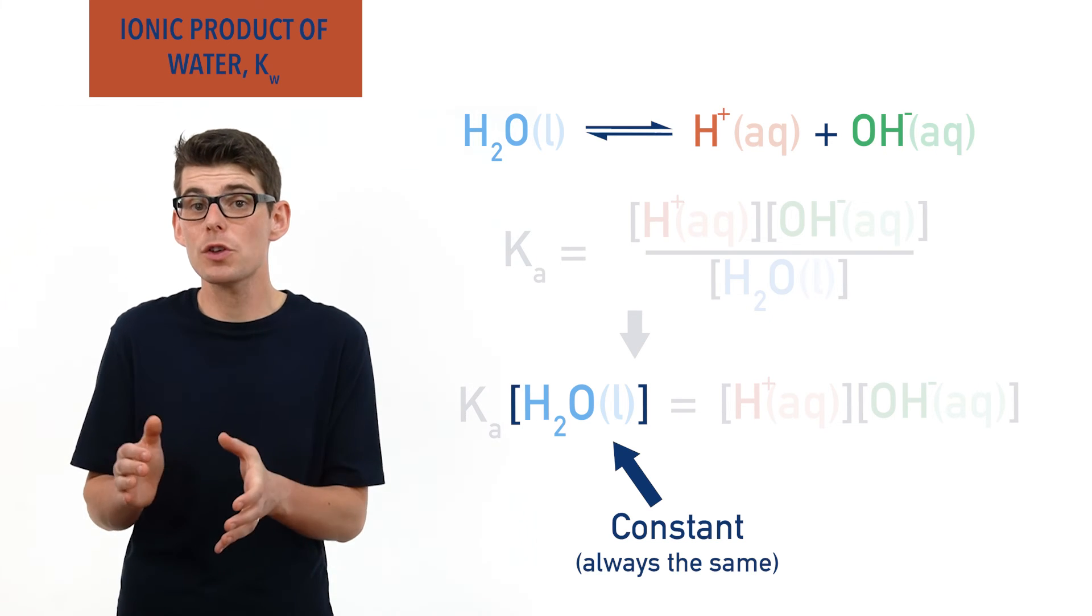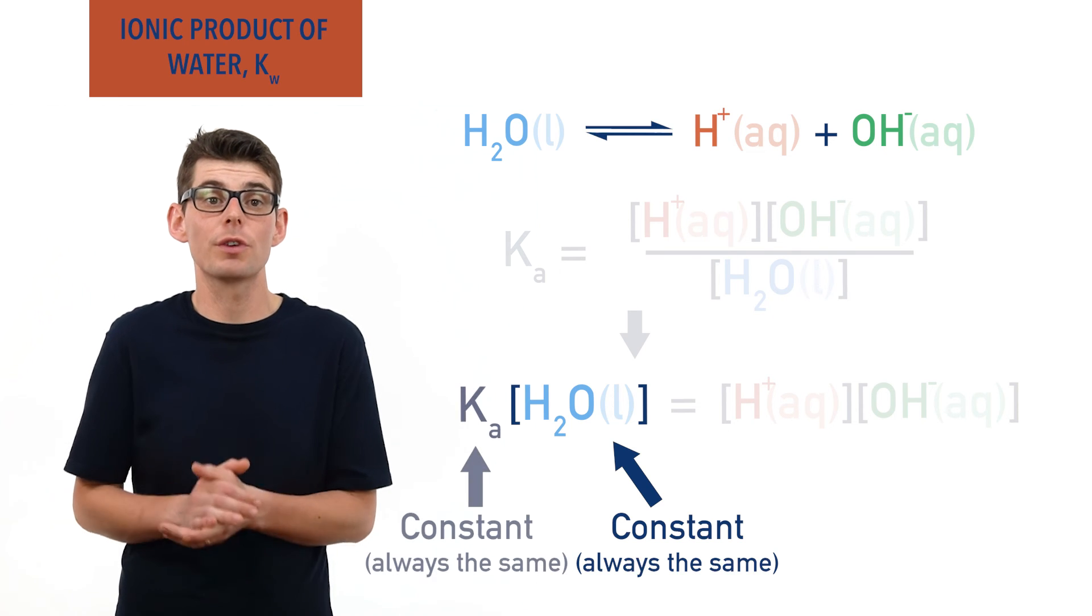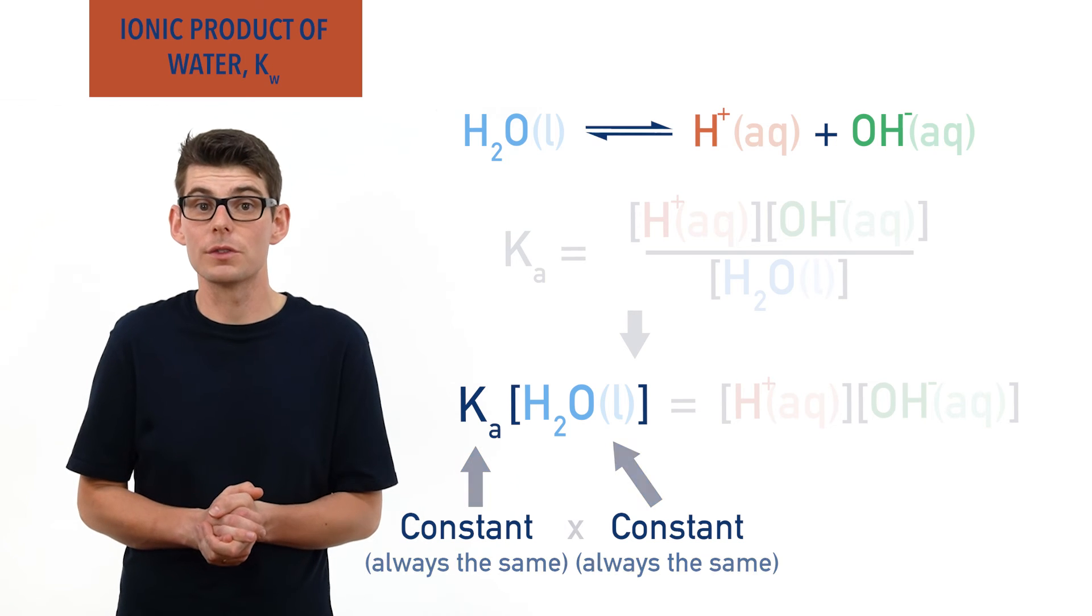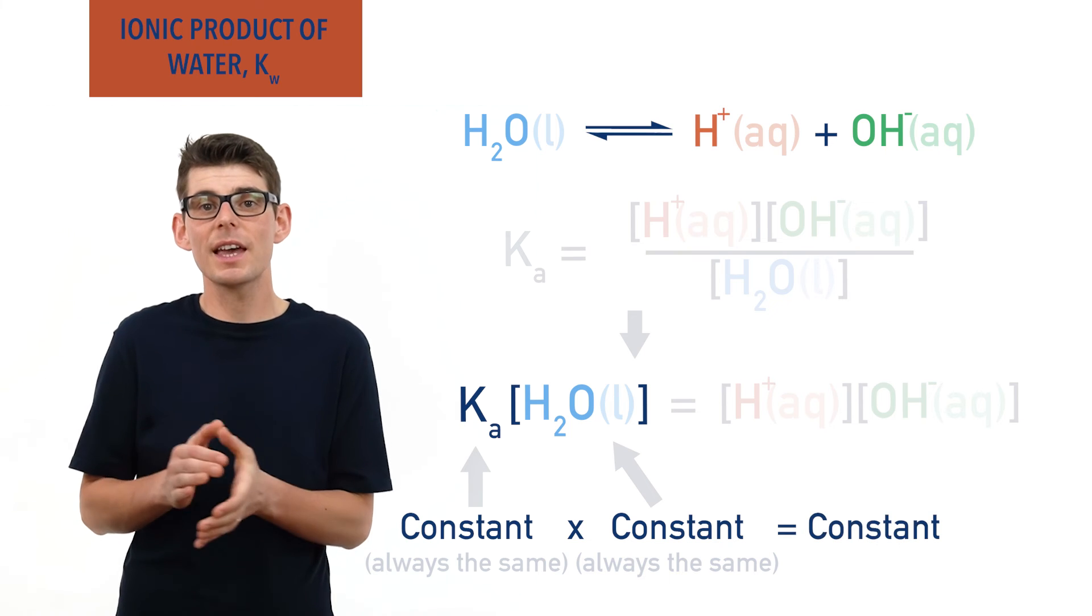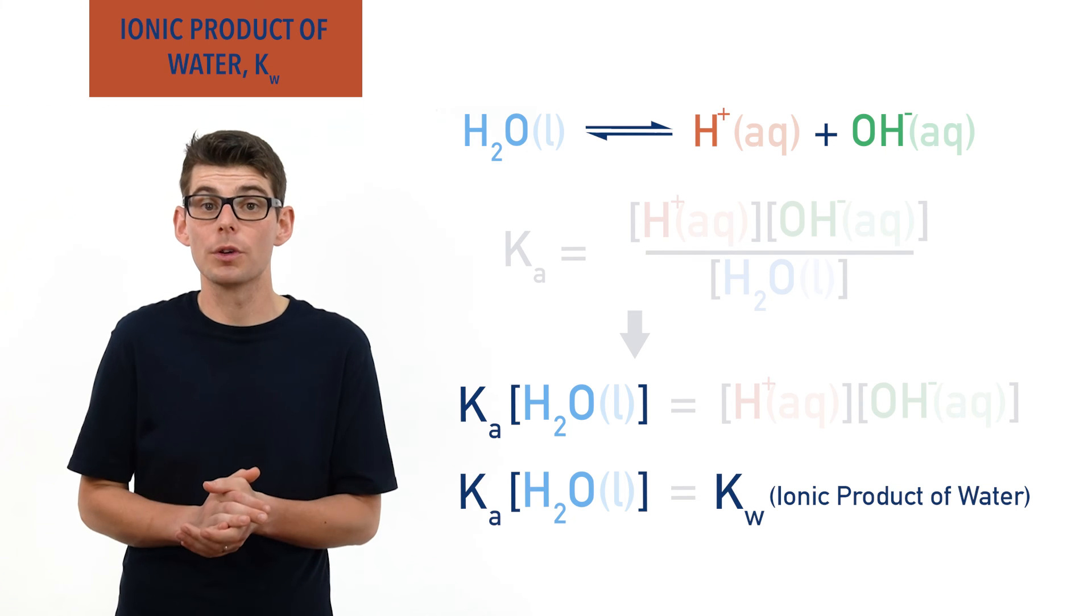Looking at our expression, we now have two constants, KA and concentration of water. Well, a constant value times another constant value will give another constant value. In this case, we call this new constant KW, the ionic product of water.